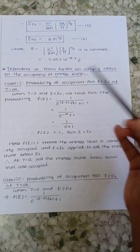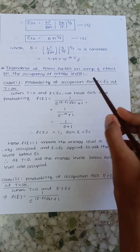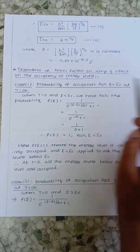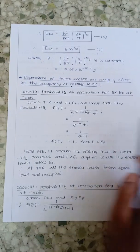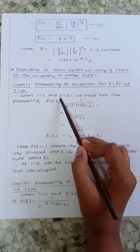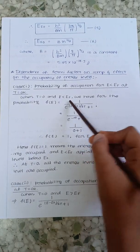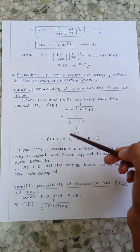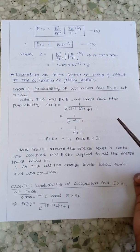Case 1 is probability of occupation when the energy is less than Fermi energy at 0 Kelvin. When the temperature is 0, energy less than Fermi energy applies to all the energy levels below Fermi energy.